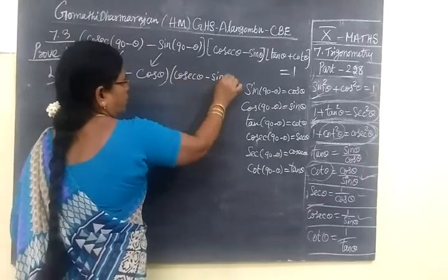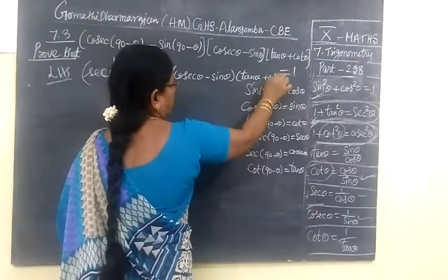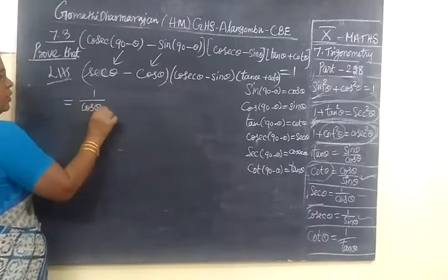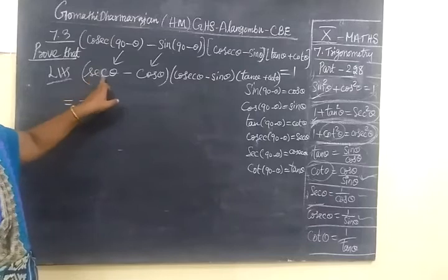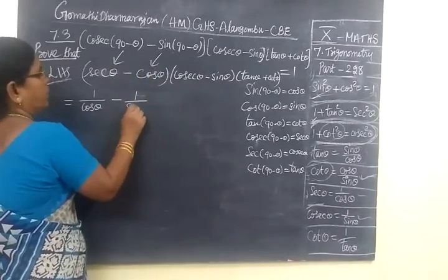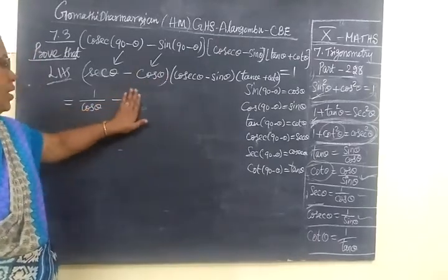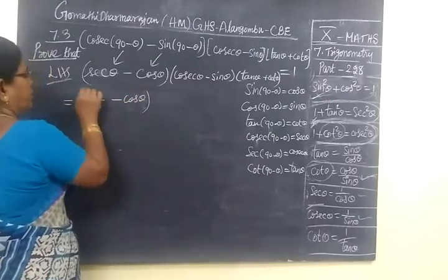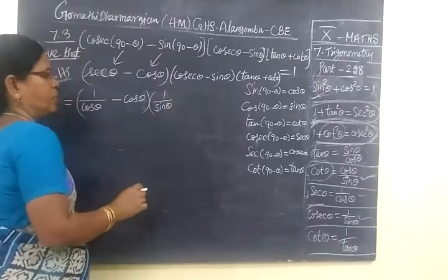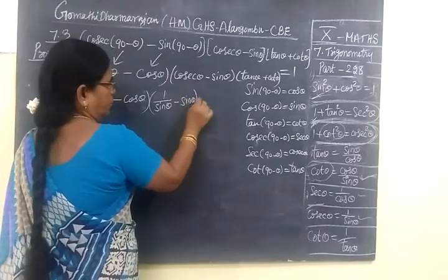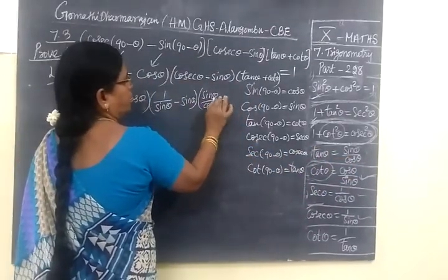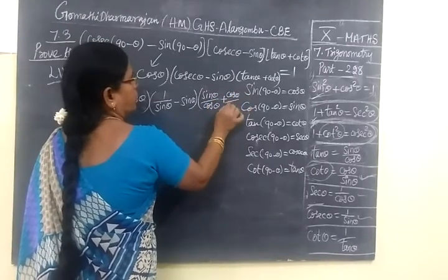Then we write as it is: cosecant theta minus sine theta, then tan theta plus cos theta. Cosecant theta is equal to sine theta — we just keep one and write the other term as it is. Cosecant theta is 1 by sine theta — cosecant is the reciprocal of sine. Minus sine theta. Tan theta is sin theta by cos theta. We write tan theta equal to sin theta by cos theta, plus cos theta, cos theta by sine theta.